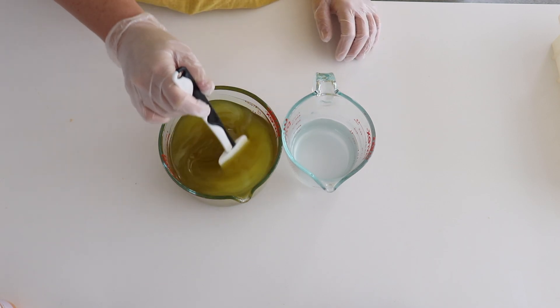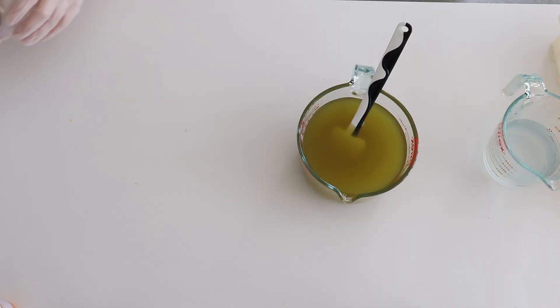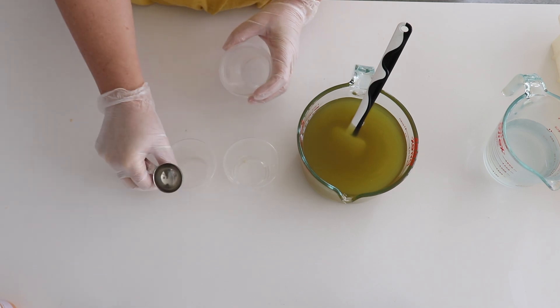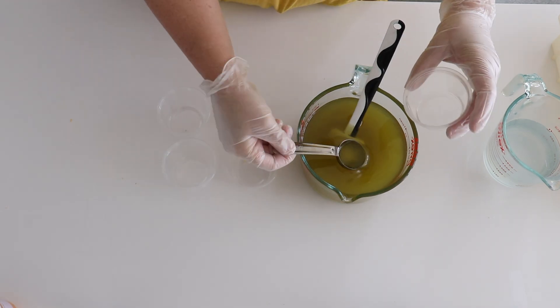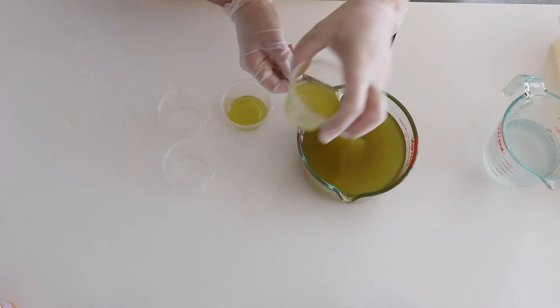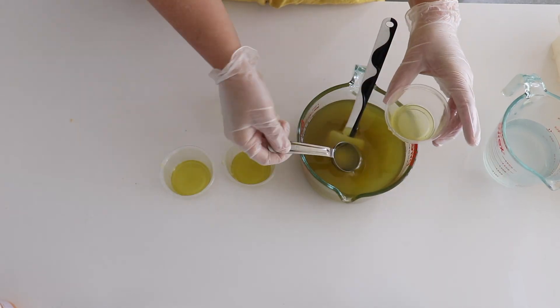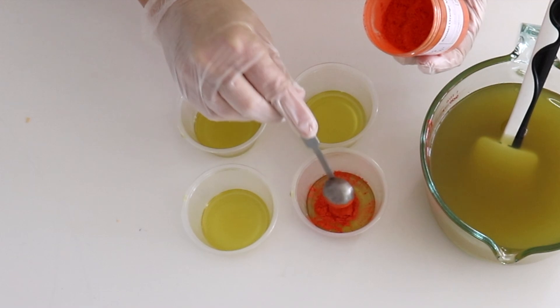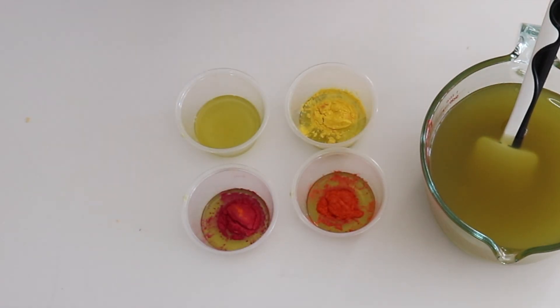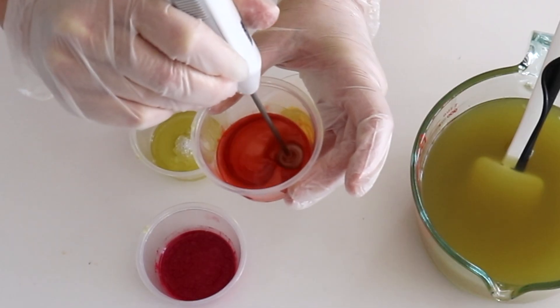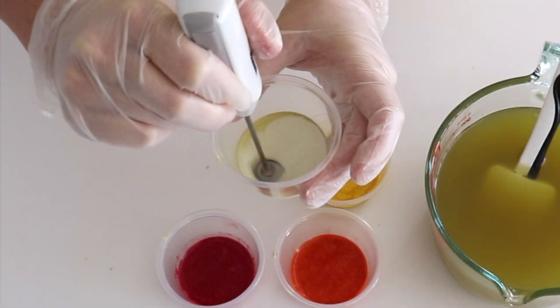I melted my oils and dissolved my lye just like I did on day one. And I prepare my colors the same way using my base oils and one teaspoon of each color and two teaspoons of the titanium dioxide. And then I mix each one thoroughly with the mini hand mixer.